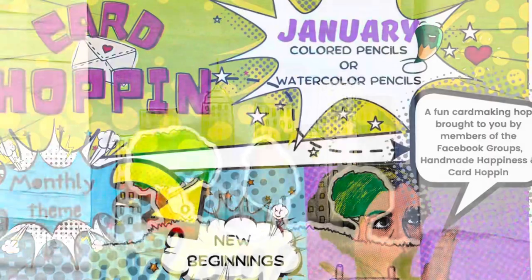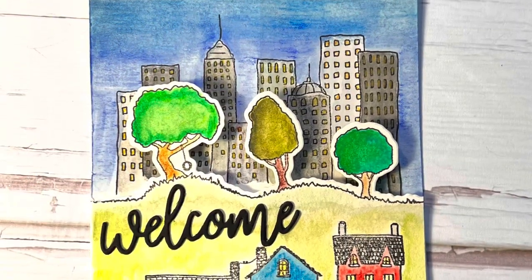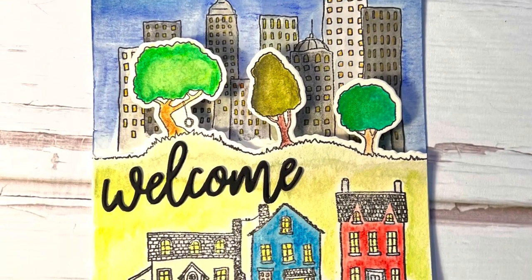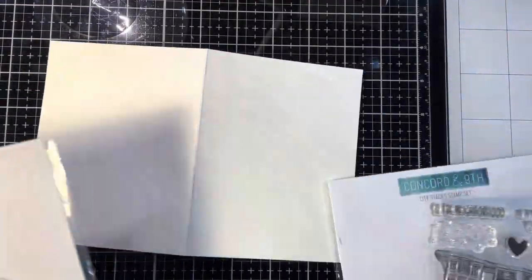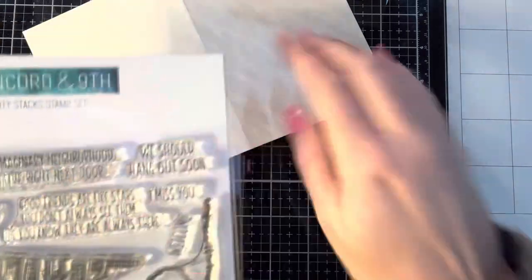Today's video is part of a hop for the card hopping group that is over on the Handmade Happiness Facebook page and we are going to be using some stamps and dies from Concord and 9th called the City Stack Stamps and Dies to create this card.